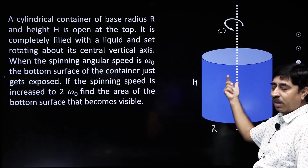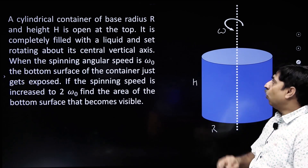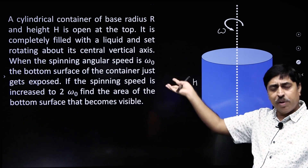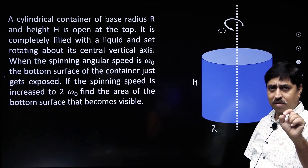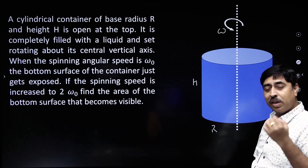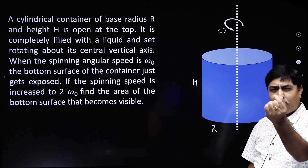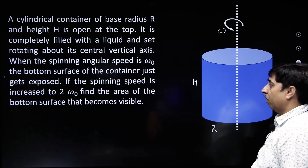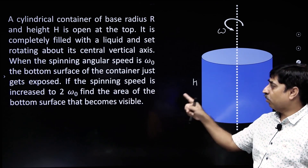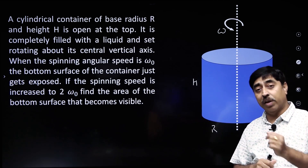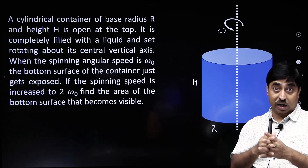When you spin the cylinder, liquid actually spills out — it is thrown out. If you go on increasing the angular speed, more and more liquid will be thrown out. At a certain value of omega equal to omega naught, the bottom surface of the cylinder just gets exposed. The question says if the spinning speed is increased further to 2 omega naught, how much area of the bottom surface will get exposed?